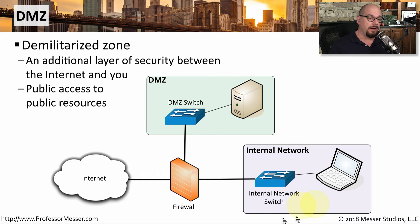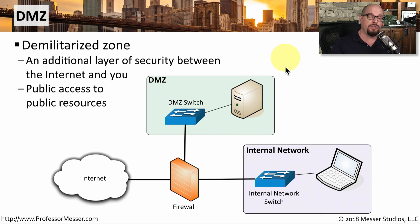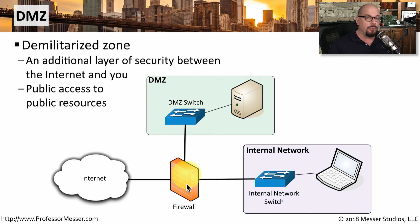One of the common uses of a firewall is to sit between the internet and our internal network, keeping anyone from the internet from directly accessing resources on the inside of our network. But we may have certain servers and services we'd like to make available to the internet while still preventing anyone from coming into our internal network. In those cases, we would create a DMZ — from the military term demilitarized zone — which is an additional layer of security between two different points. We create a completely separate segmented network for those externally accessible services, then configure firewall rules to allow access from the internet to the DMZ but prevent any access from the internet to our internal network.